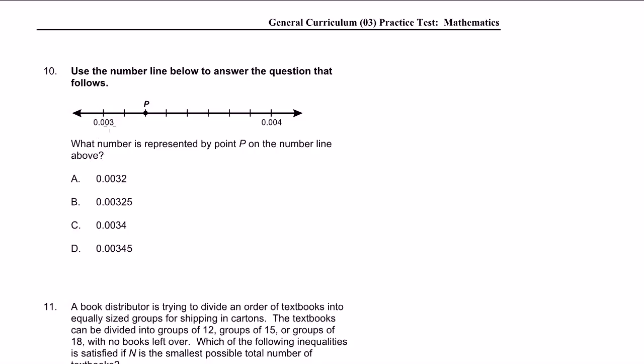OK, we have a number line. What number is represented by point P on the number line above? OK, so they give us two endpoints, 0.003 and 0.004. And how many buckets do we have between them? We're going one increment. Oh, sorry, I'm on the wrong layer. We go one increment, two increments, three increments, four increments, five increments, six increments, seven increments, eight increments. So over eight increments, we go a distance of how far? Well, the distance we go is 0.004 minus 0.003, which is just 0.001. So this whole distance right there is 0.001.